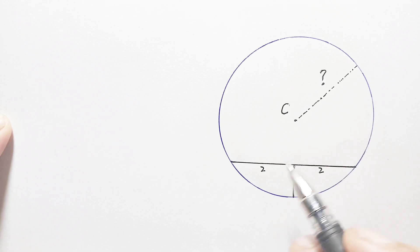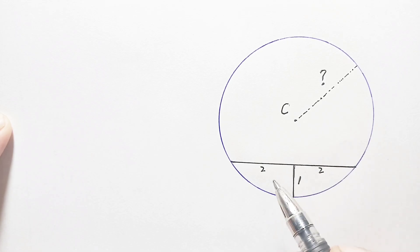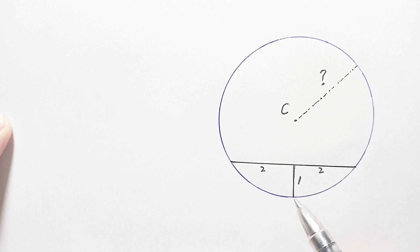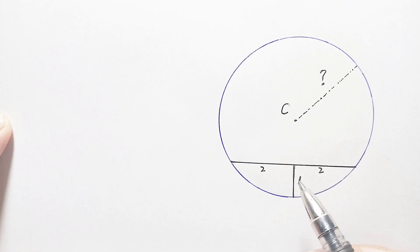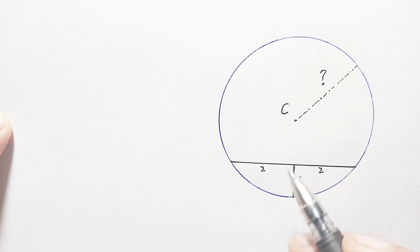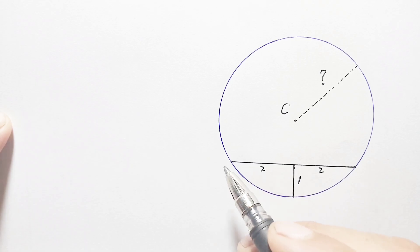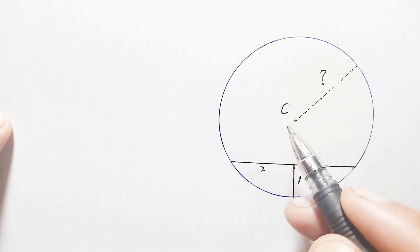I will solve this problem using two different methods. The first is by using the Pythagorean theorem and the second by using the chord rule. To apply the Pythagorean theorem, we need to make a right angle triangle, so first we will connect this point with the center.